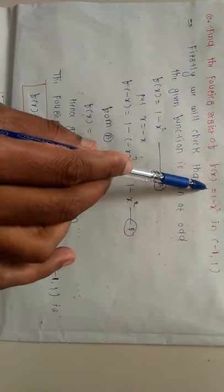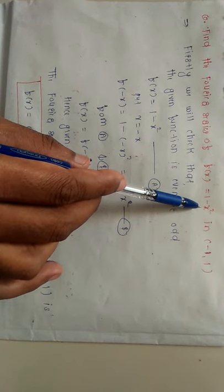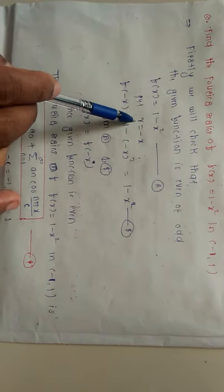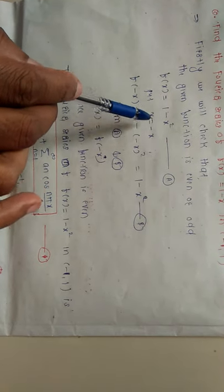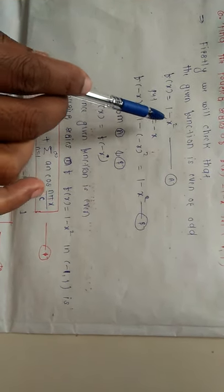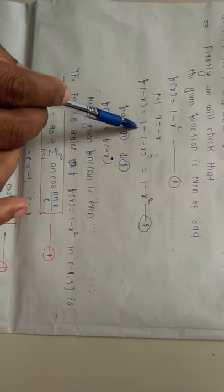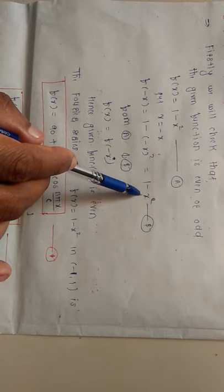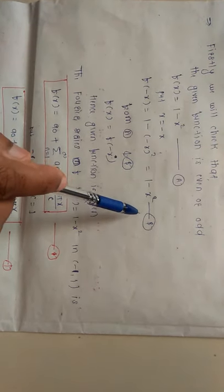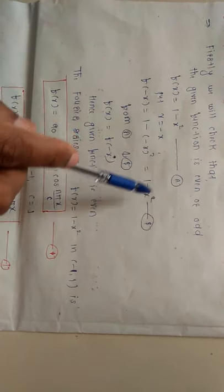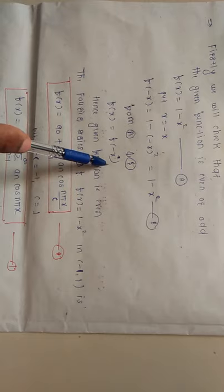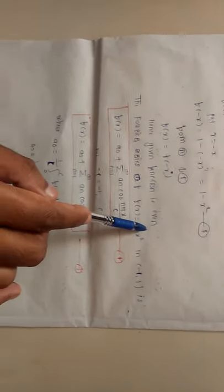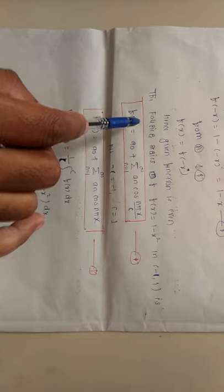First, we will check whether the given function is even or odd. To check this, put x = -x. The given function is f(x) = 1 - x². Substituting x = -x gives f(-x) = 1 - (-x)² = 1 - x². Since f(-x) = f(x), the given function is even.